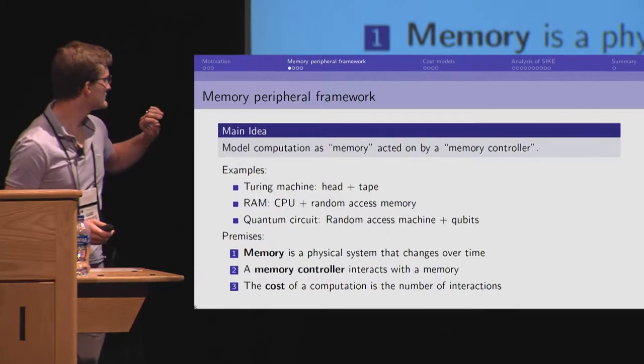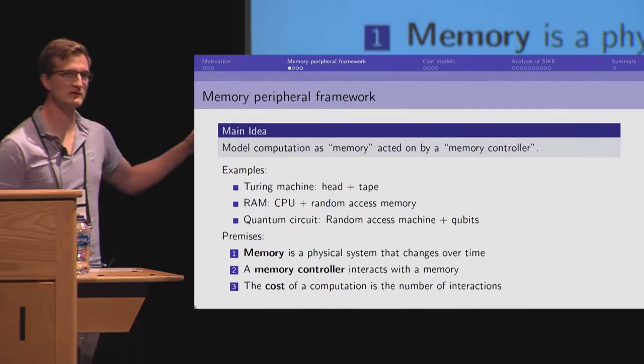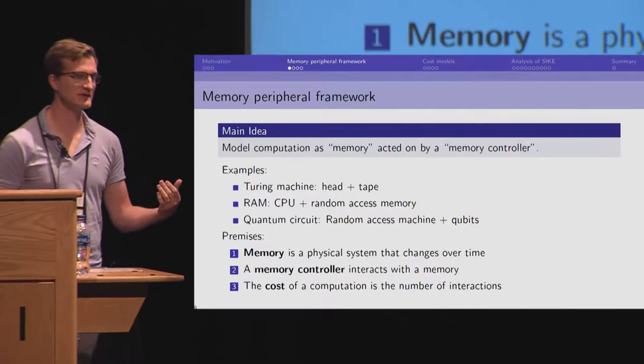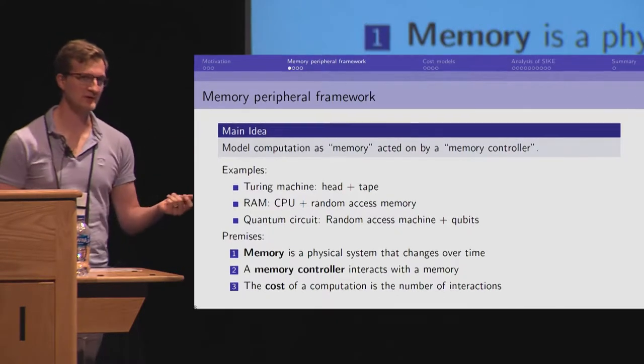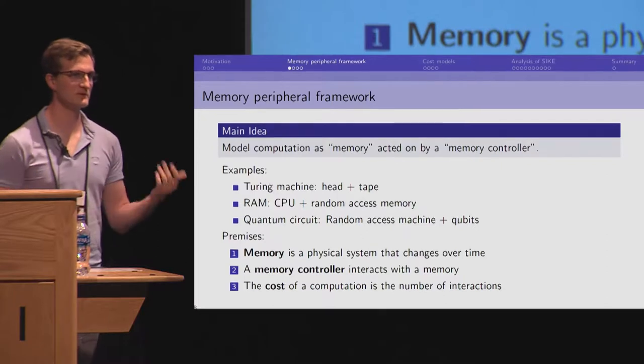We have three main premises for these. One, that the memory is a physical system that can change over time. Two, that the memory controller interacts with the memory. Number three, that the cost is the number of interactions.